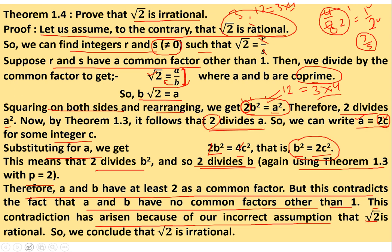The assumption that root 2 is a rational number is wrong. So we conclude that root 2 is irrational. This is called proof by contradiction. If you need to prove something like root 2 is irrational, first assume it is rational, work through it, find a contradiction, and then conclude that the original assumption was wrong.